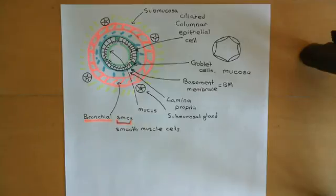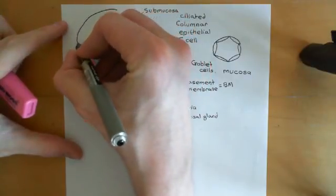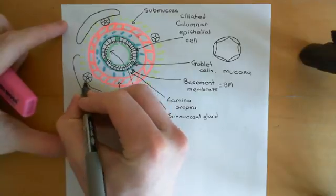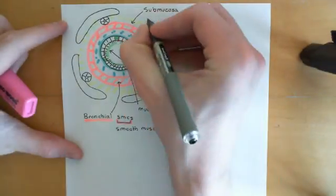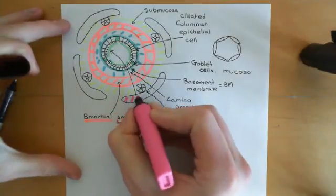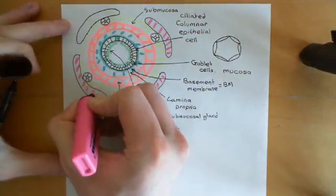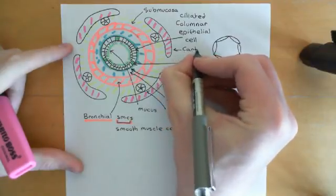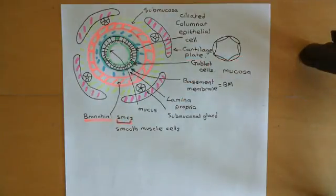Outside of the submucosal layer, you then have the cartilage layer. In the bronchi, you do not have a continuous ring of cartilage — instead, what you have is sheets or plates of cartilage. Around the outside of the bronchus, there are plates of cartilage which will gradually get smaller and smaller as you go down to smaller and smaller bronchi. These just add a bit of structural support to the bronchus.